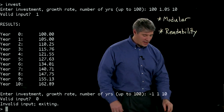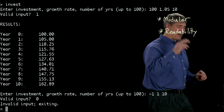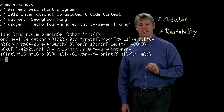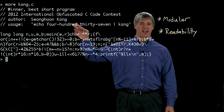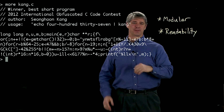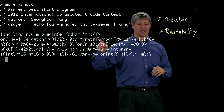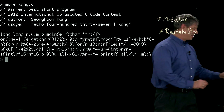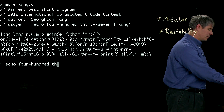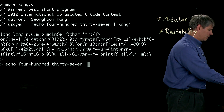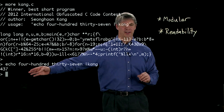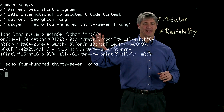I'd like to end this video by showing you a piece of code that doesn't satisfy these ideas. This is a piece of code that was a winner in the 2012 International Obfuscated C Code Contest. And believe it or not, this code actually performs a useful function. But the goal of this contest is to make the code as hard to read as possible — this is not what you want to do. It takes a number written out in English and turns it into a numerical value. Anyway, when you're expert enough to write code like this, then you don't need these videos anymore.